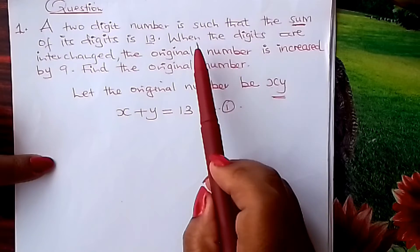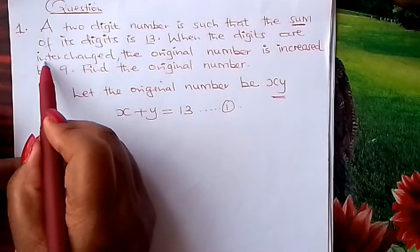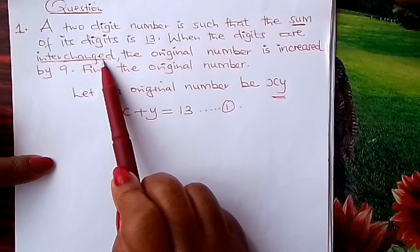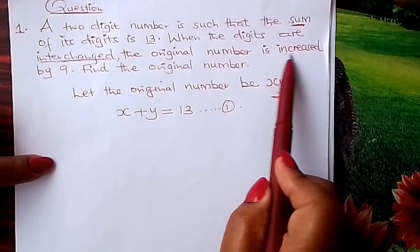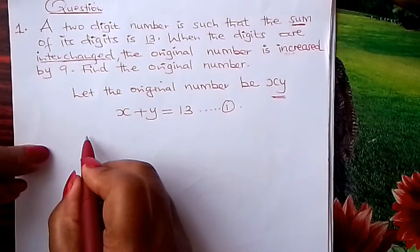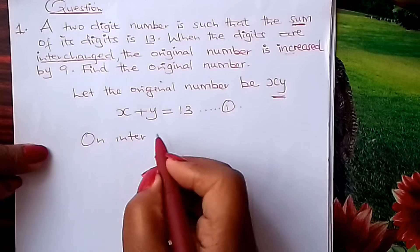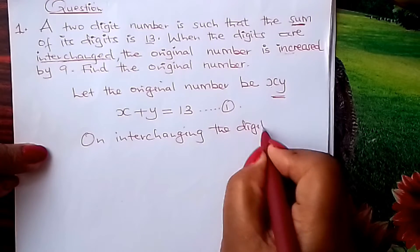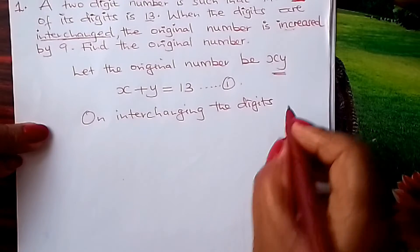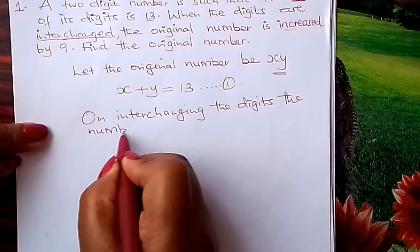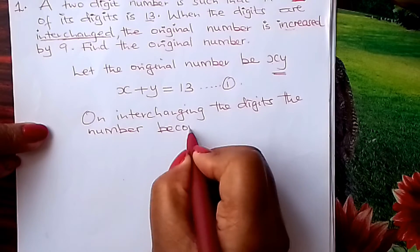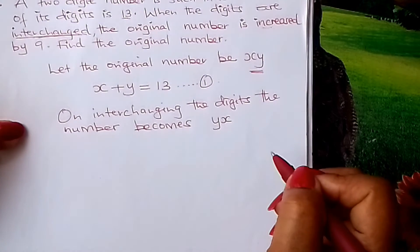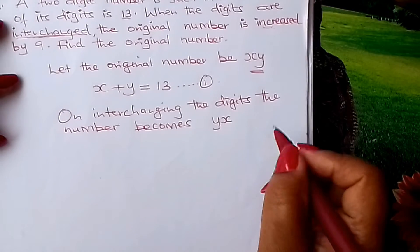Let us now go to the second sentence. When the digits are interchanged or reversed — sometimes we talk about reversing — on interchanging the digits, the number becomes YX. It was XY, and therefore now it will be YX on interchanging.